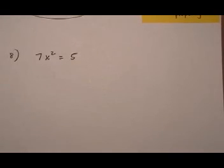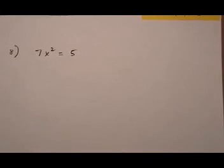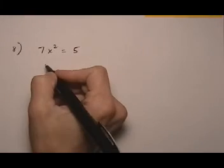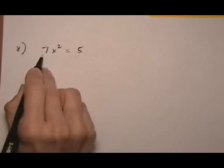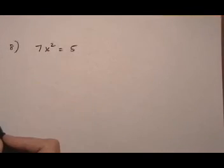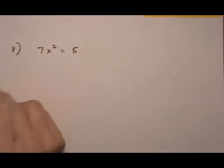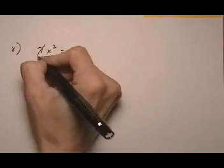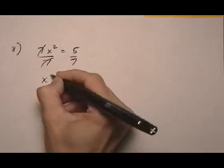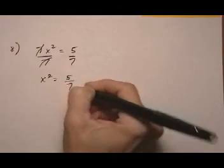And one more. 7x squared equals 5. So right now we don't have something squared equals a number. We have 7 times something squared equals a number. So we need to make this 7 go away here. We don't want it attached to the squared item. Divide by 7 on both sides. x squared equals 5 over 7.